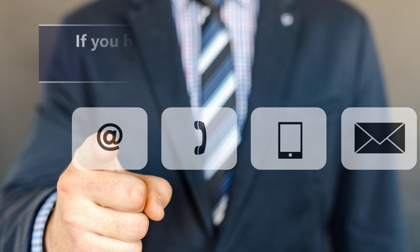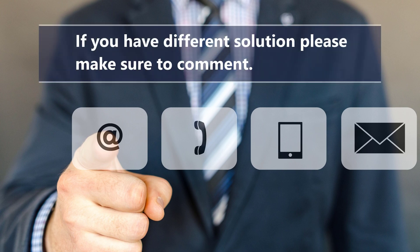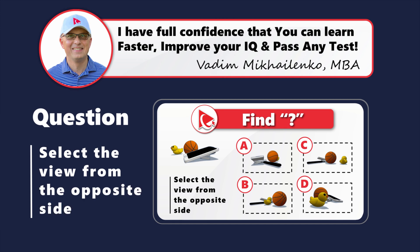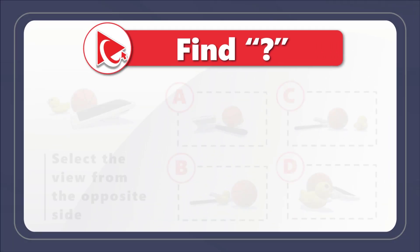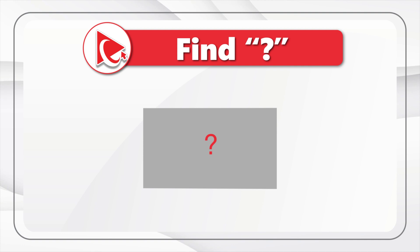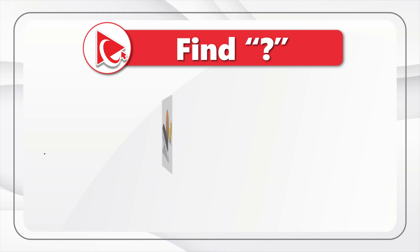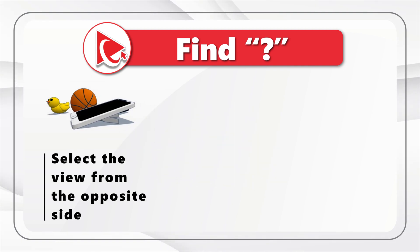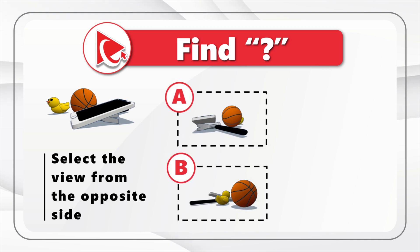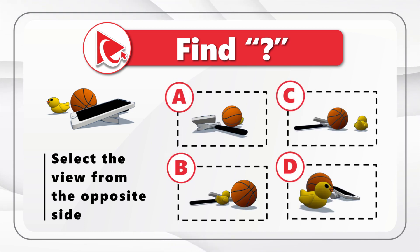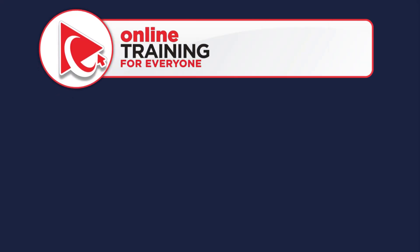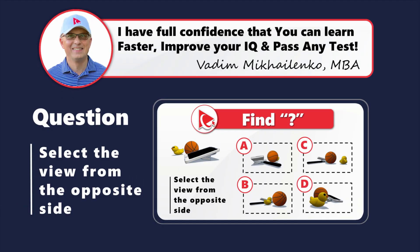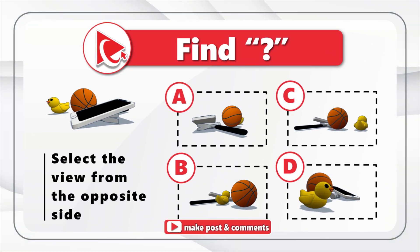Here's an amazing question to test your spatial reasoning. You're presented with a three-dimensional view and you need to select the view from the opposite side out of four possible choices: A, B, C, and D. Take a close look — it may not be as easy as it seems. I'm moving forward to share my version of the answer, and if you have a better way to solve it, please post in comments.